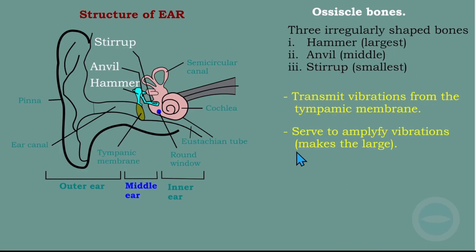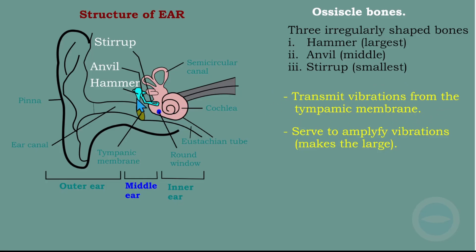The next part is the ossicle bones. When we talk about ossicle bones, we talk about the stirrup, the anvil, and the hammer. These are three irregular-shaped bones: the hammer is the largest, the anvil is medium in size, and the stirrup is the smallest. Their function is to transmit vibration from the tympanic membrane to the inner ear or oval window, and they also serve to amplify vibration — they make the vibration larger.